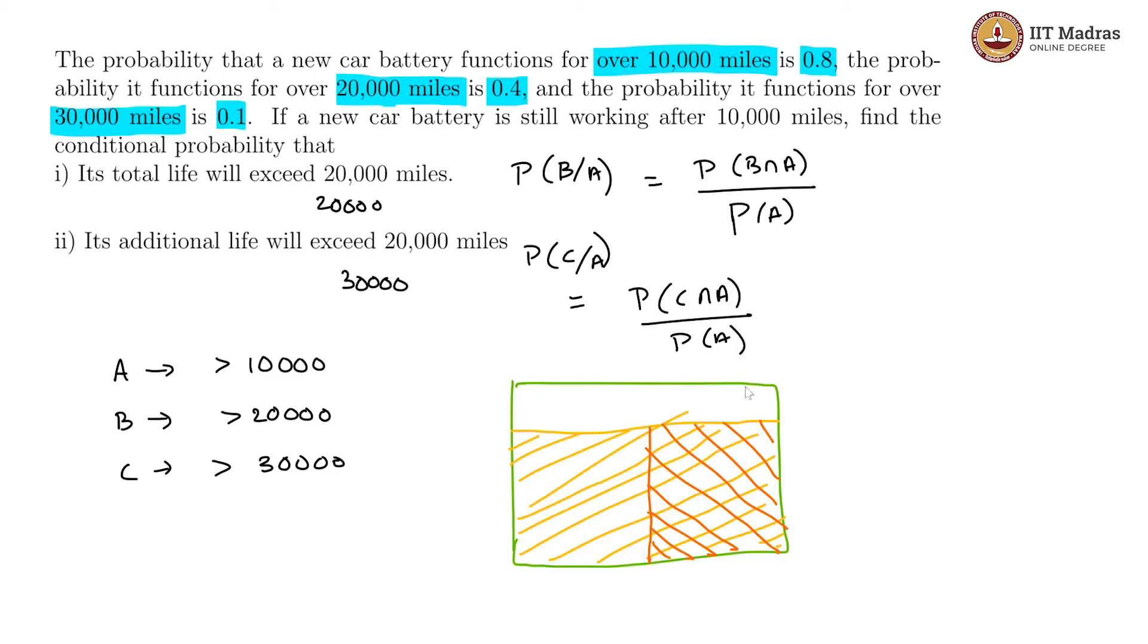Because B has to happen only when A happens, B is completely within A. Lastly, 30,000 miles C happens within B. Within A is B and within B is C, so C is also within A.